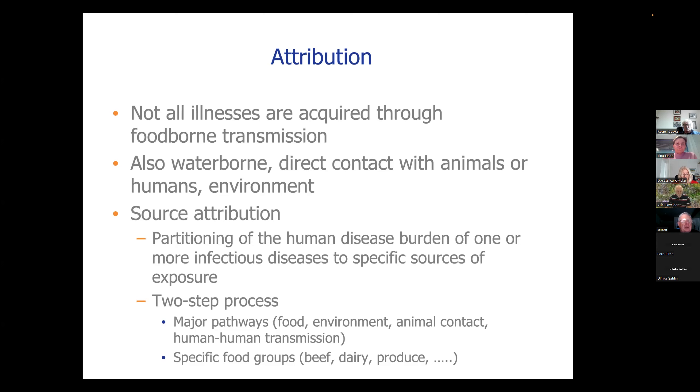And we typically, certainly in the area of foodborne disease, take a two-step process for this attribution. First, the attribute to these major pathways, food, environment, animal contact, human-to-human transmission is often used, but not always. And then within food, we attribute to specific food groups like beef, dairy, produce, fish, those kinds of things. And that's a mechanism that has been used in many studies.